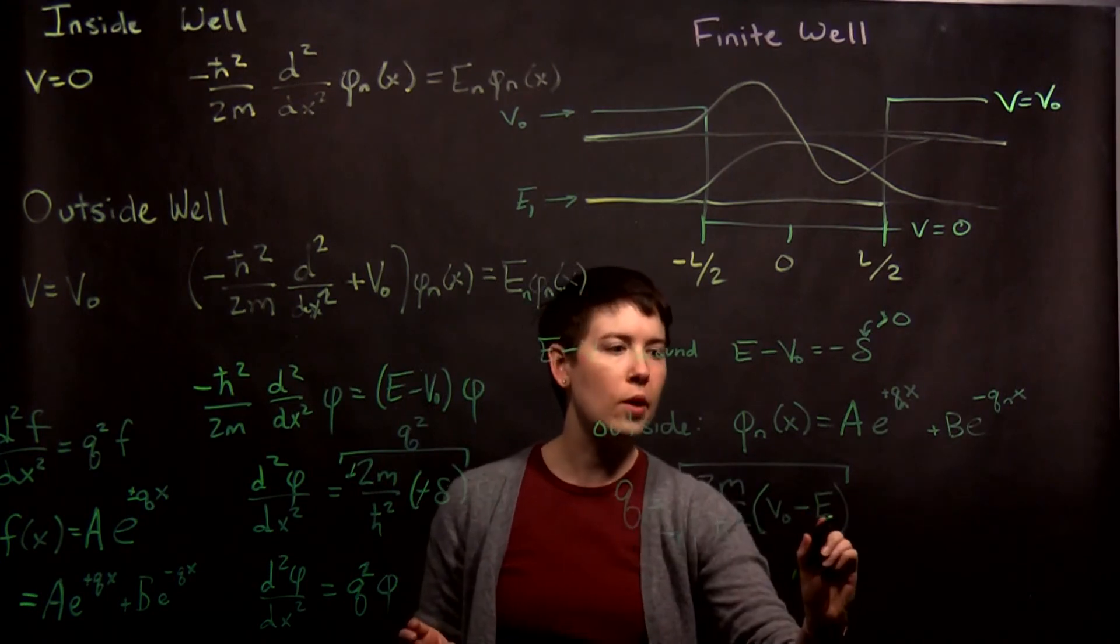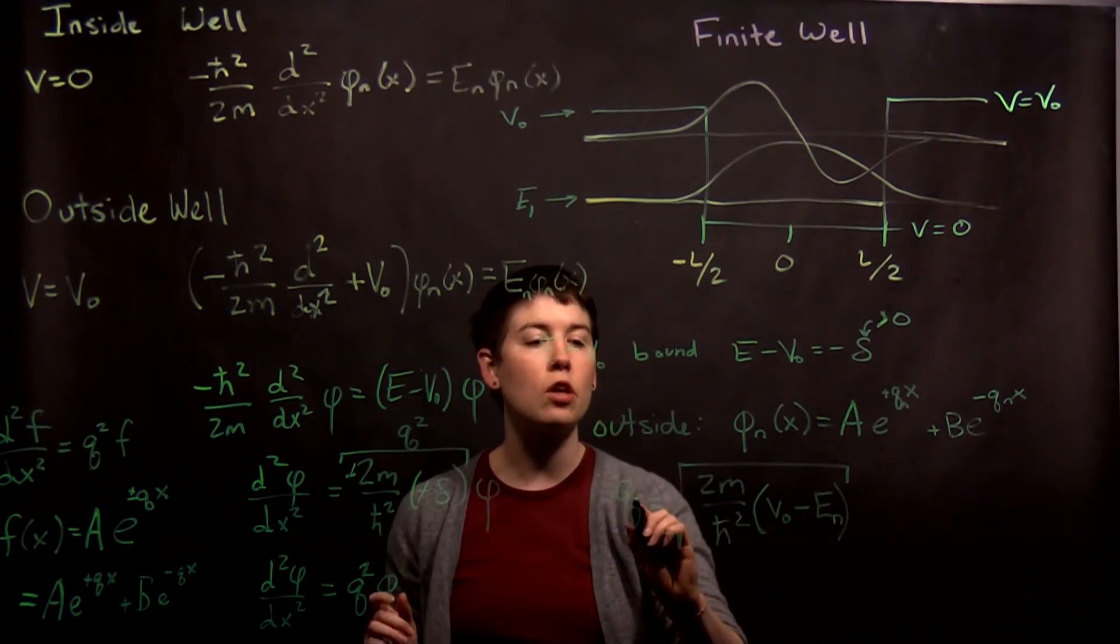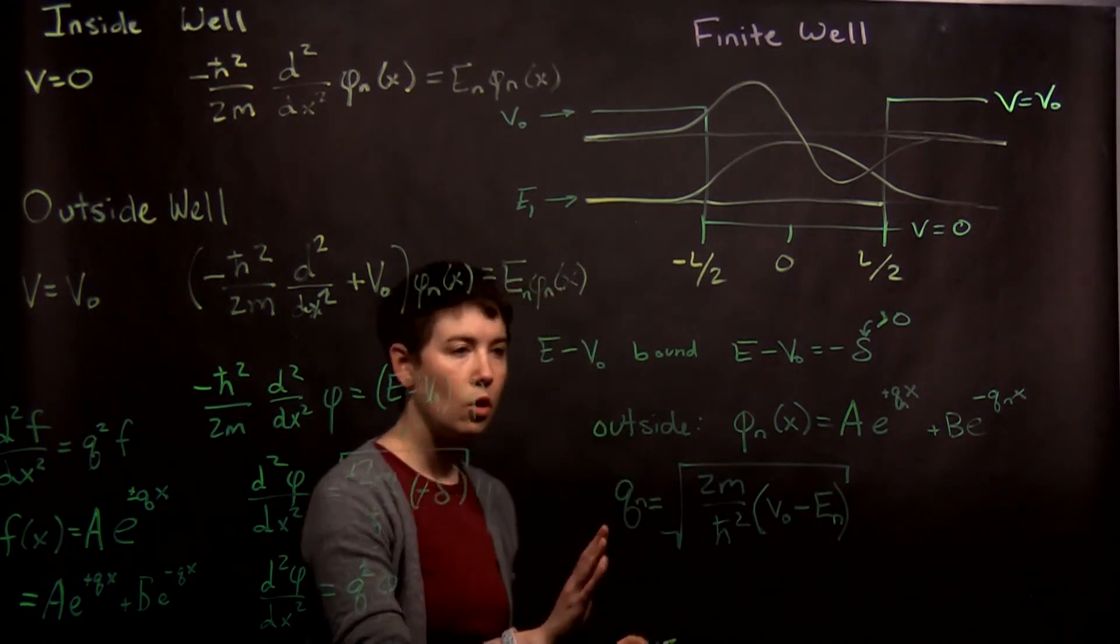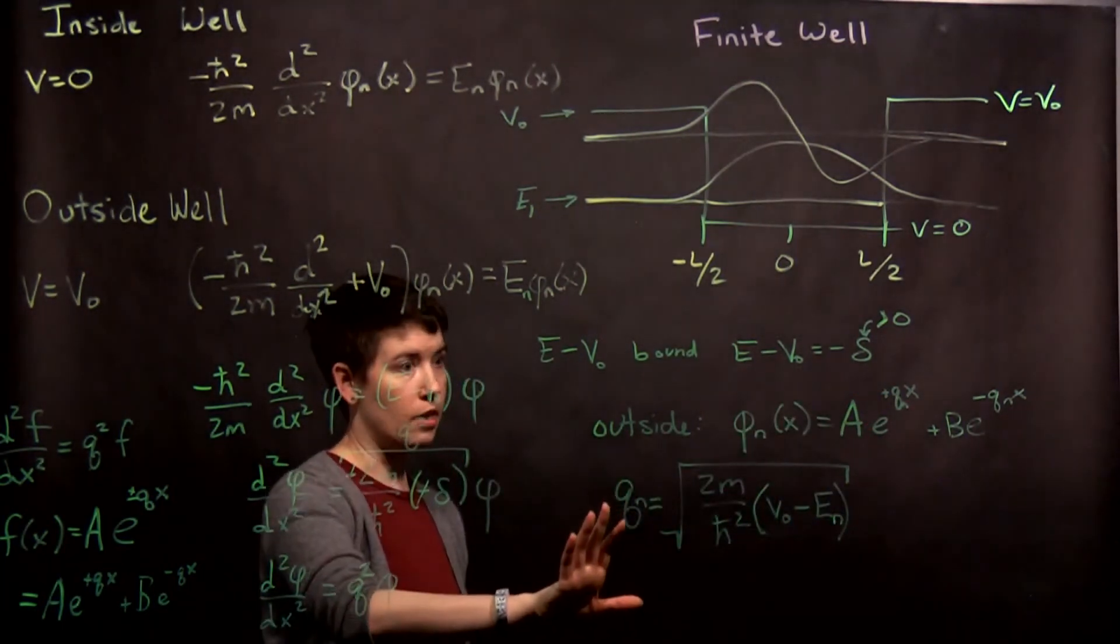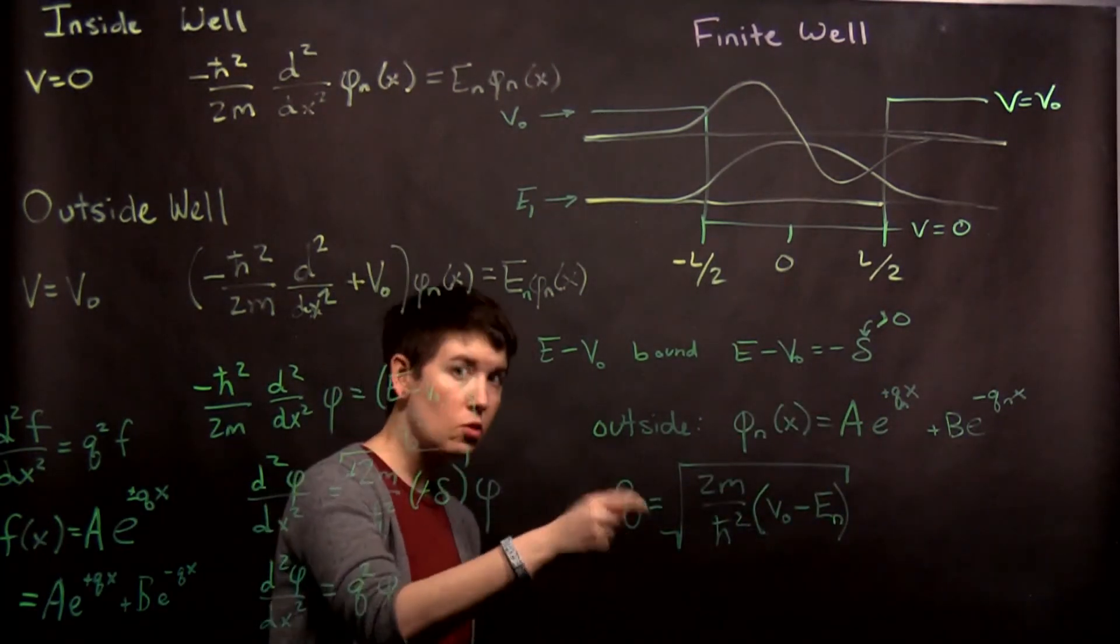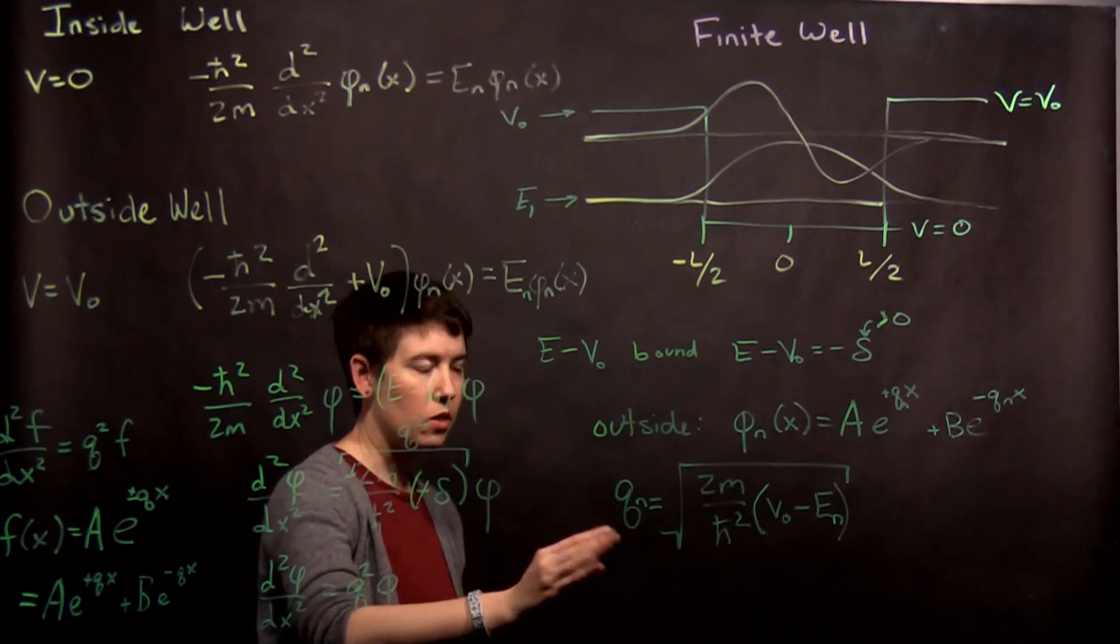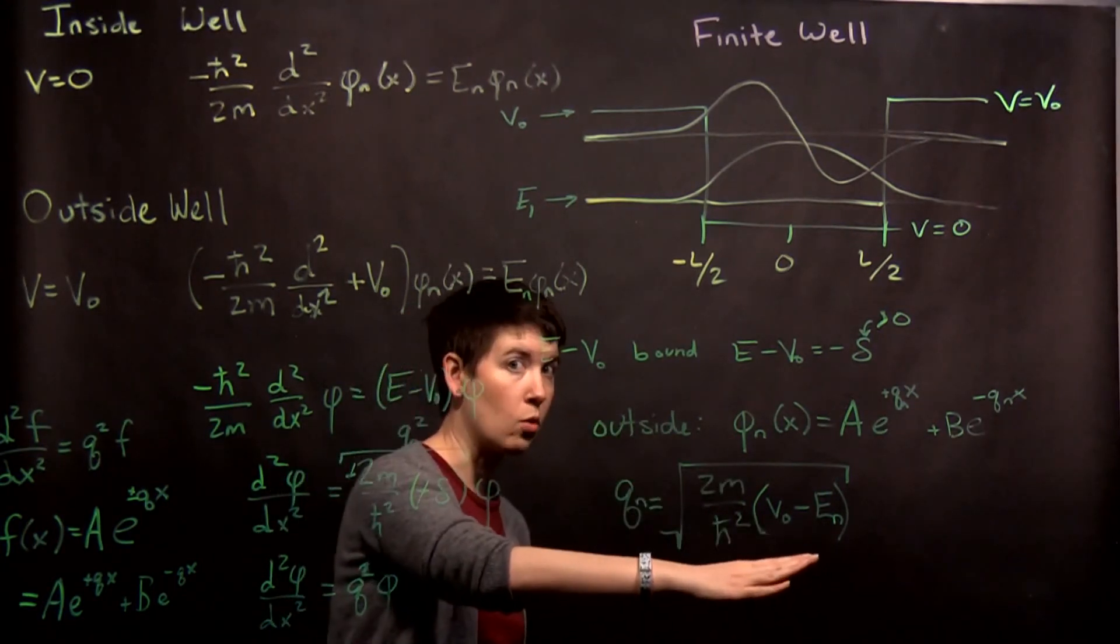So how does this become qₙ? Well, keep in mind that our energies are going to be quantized. So our qₙ up here is this complicated thing, and we get quantized possibilities for q, because we expect that our energies are going to be quantized.